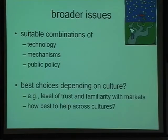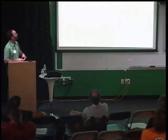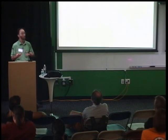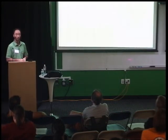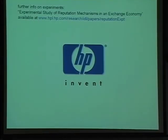There are a variety of broader issues going back to the three approaches to encourage good behavior: finding combinations of technology, mechanisms, and public policy. How does that depend on culture? If you're interested in this, there are a couple of good books that describe more of the policy context around some of these issues - both authors are really great speakers. They look at the social and policy issues with the emphasis that it's not just technology. Technology enables new things, gives us new problems, new capabilities, new opportunities. But it's important to keep in mind the context.